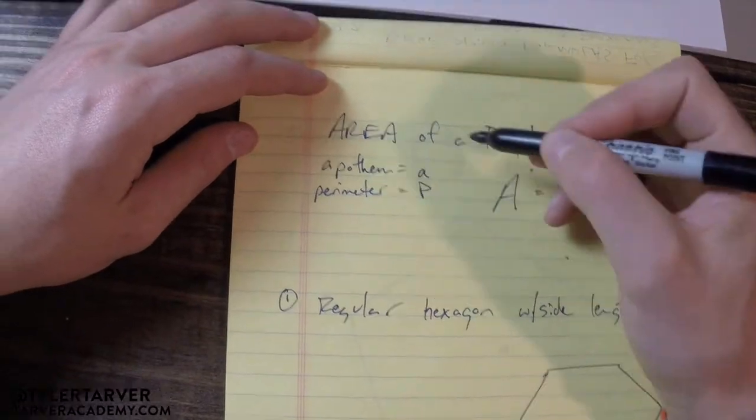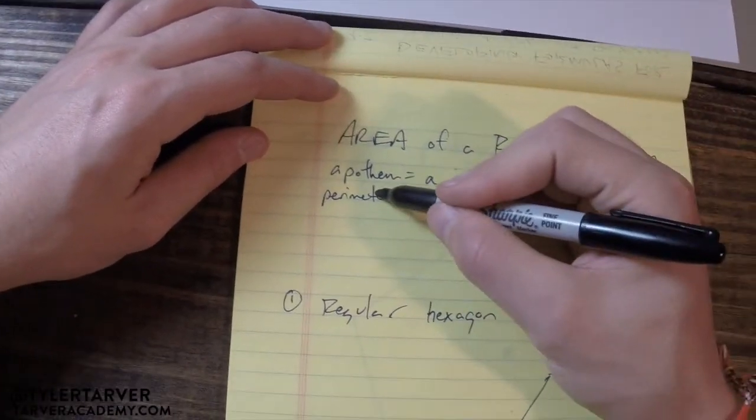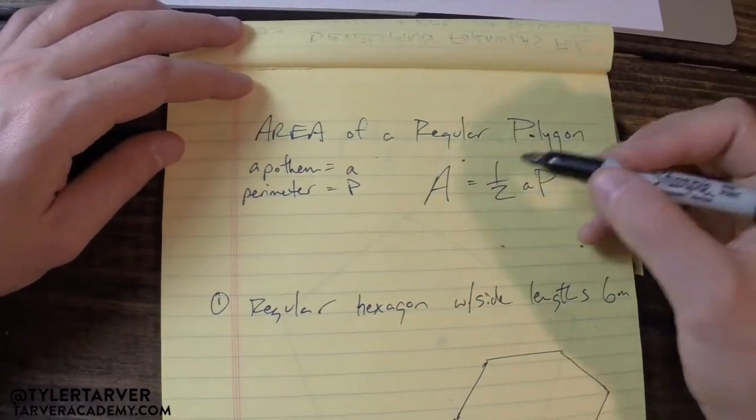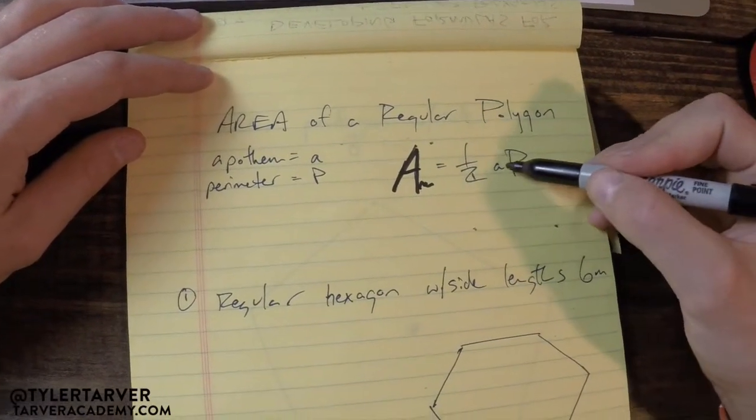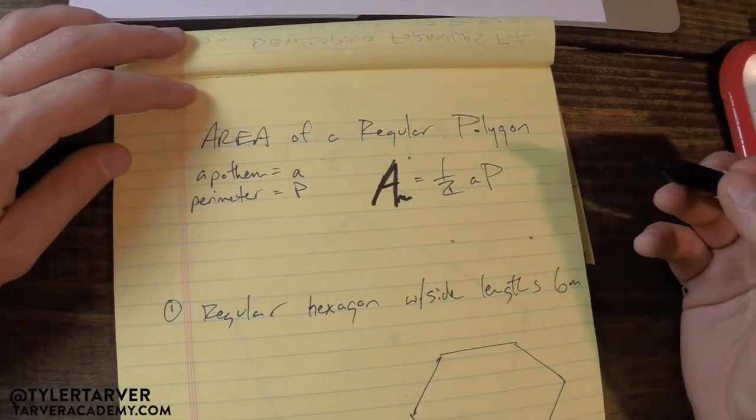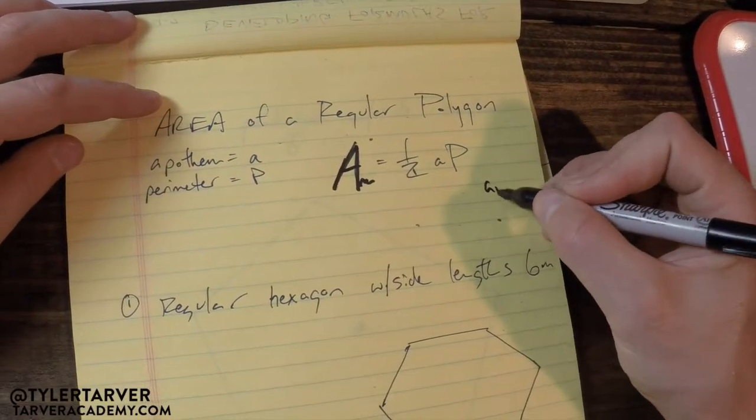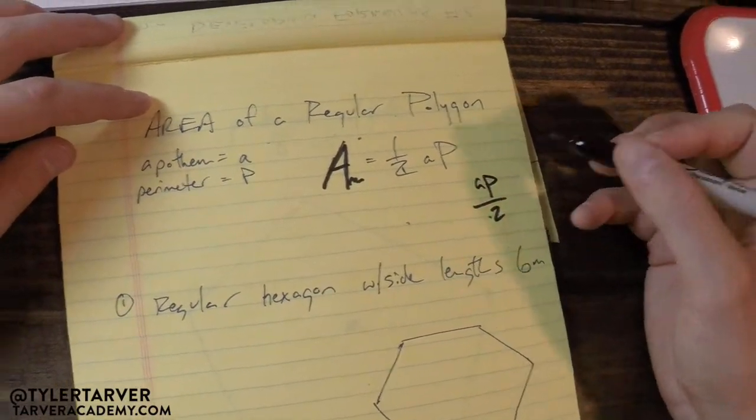Our little a is gonna be our apothem, not area. Perimeter is gonna be P. So to find the area we have to find one half the apothem times the perimeter. Or you could just do aP over two, either one.